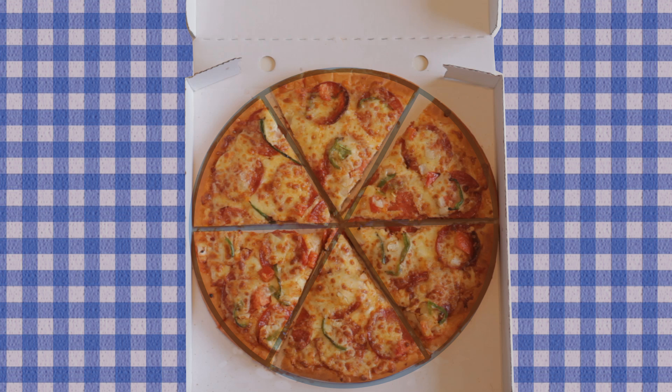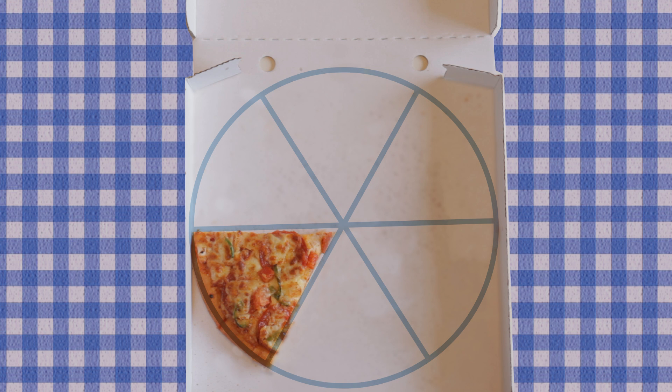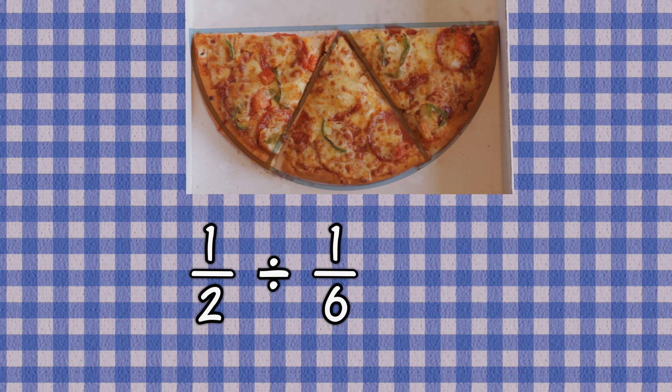Now look at the pizza below. How many one-sixth slices fit into a half slice? Three. So now you can see that a half divided by one-sixth really does equal three.